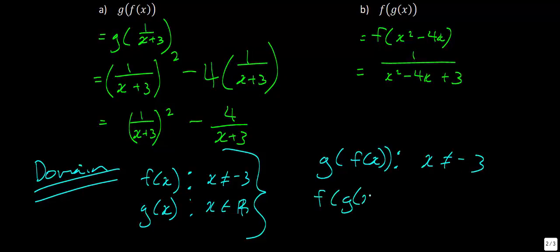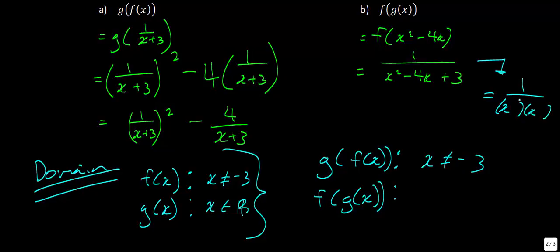For f of g of x, we have 1 divided by the quadratic, and we need to find when the denominator equals zero. If we factor x squared minus 4x plus 3, we get (x minus 1)(x minus 3). So the restrictions for f of g of x are different: x cannot equal 1, because that turns the factor to 0, and x cannot equal 3. Sometimes finding the domain of the original functions helps, but other times you have to go a little bit further.